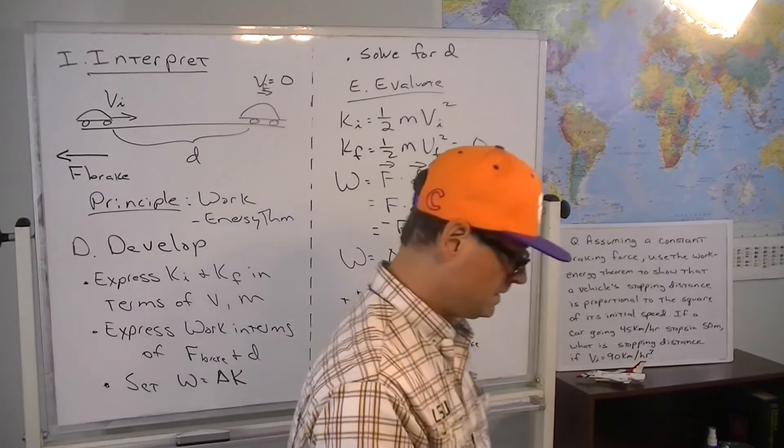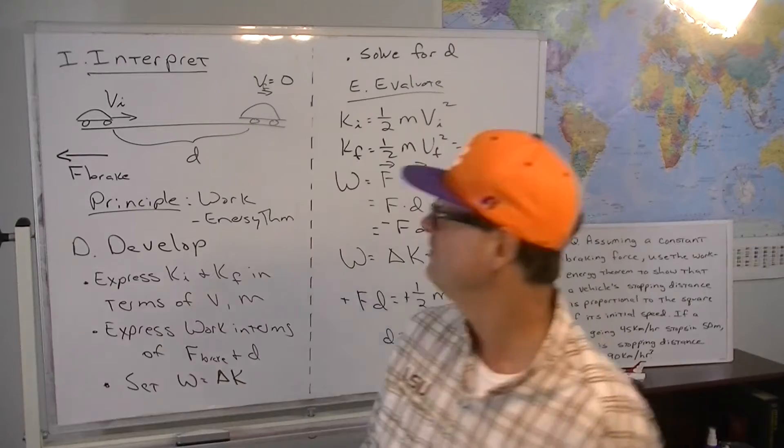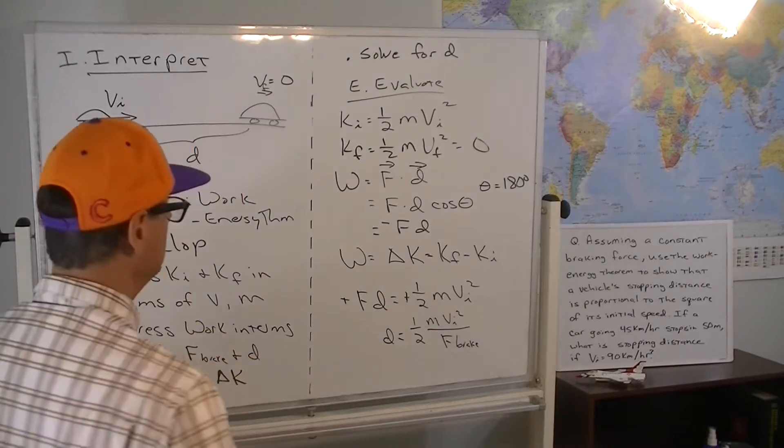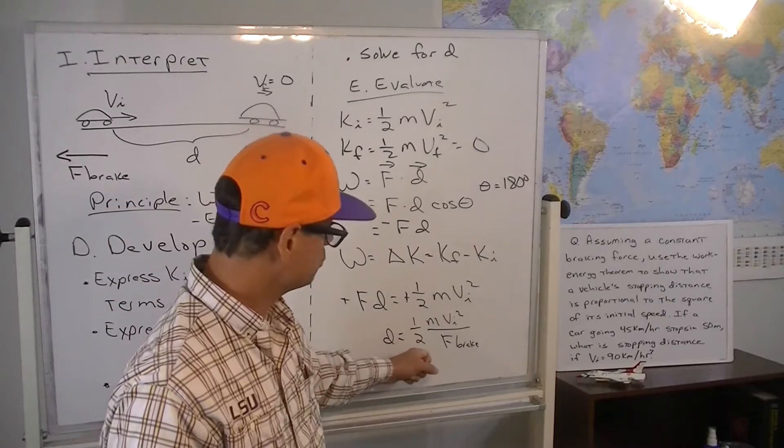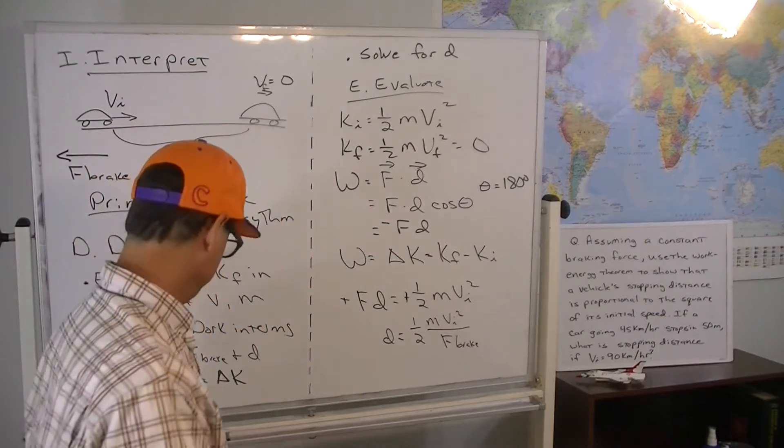And so, this is what we were asked to do, at least in the first half of the problem. It wanted us to show that the stopping distance is proportional to the square of the initial speed.